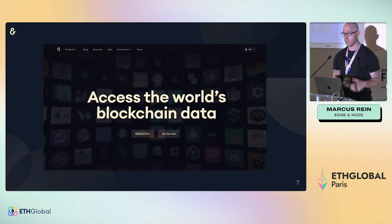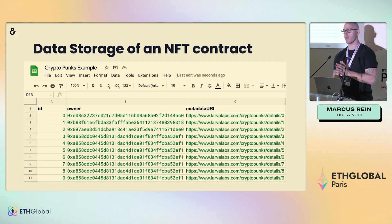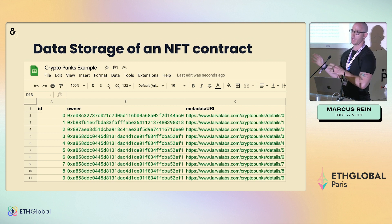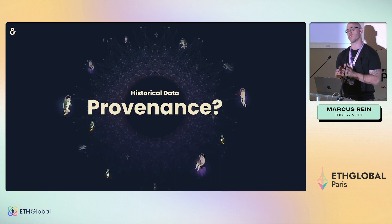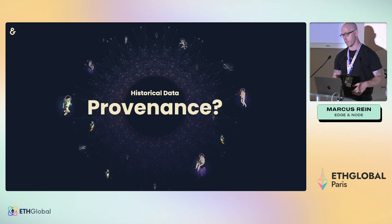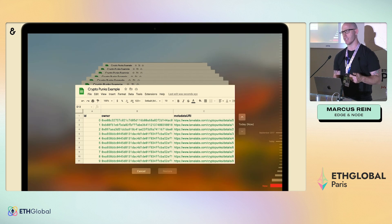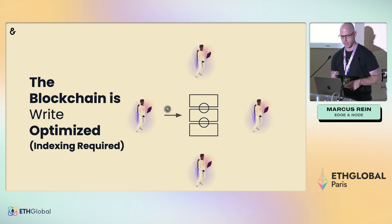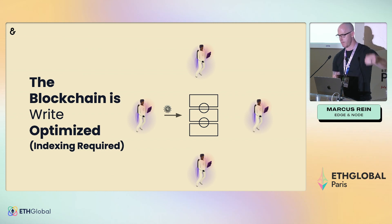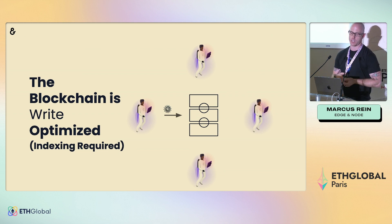The first thing when you go to thegraph.com, you see 'access the world's blockchain data.' The data storage of a smart contract is very isolated if you only look at it at one point. If you want to understand how that smart contract has existed over time — the provenance, the history — you need to index that data. Think of it like backing up data over timestamps in a disorganized way.